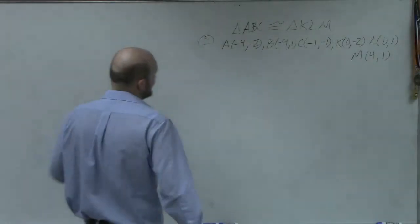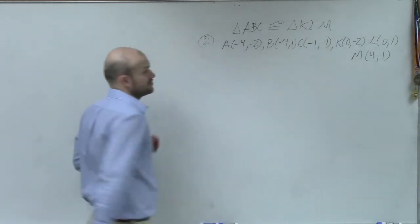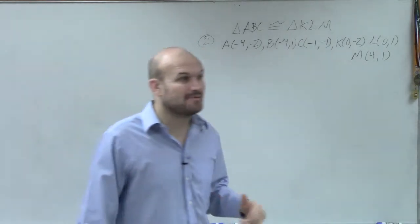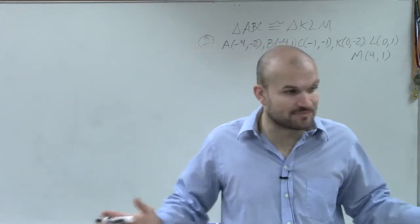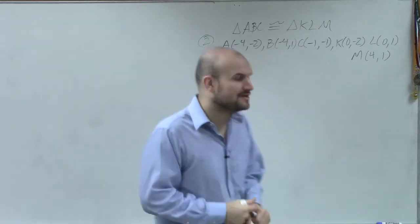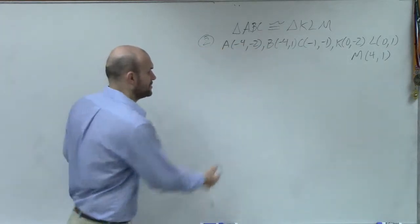Guys, what they're asking us to do in this case is to determine if my triangle ABC is congruent to triangle KLM. Now, before I can even make any sense of this problem, I have coordinate points. I'm going to want to plot those coordinate points to be able to see what exactly I'm looking at.